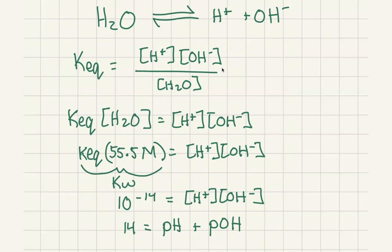We can think about this either directly in terms of concentrations, or indirectly in terms of pH and pOH. What this tells us is that there is a constant relationship — a balance — between the concentration of protons and the concentration of hydroxide ions. If one of them increases, the other has to decrease. So if we see a change in proton concentration, this causes a decrease in hydroxide concentration.